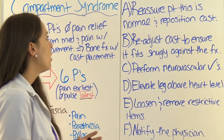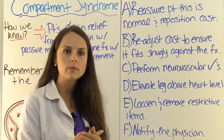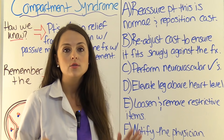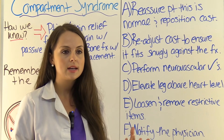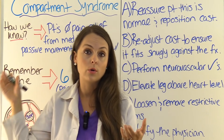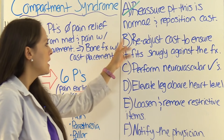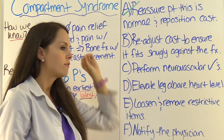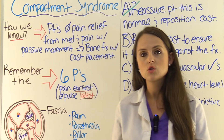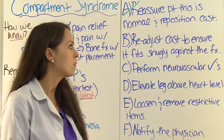Now let's look at our options. This is a select-all-that-apply, so there's more than one answer. Option A — reassure the patient that this is normal and reposition the cast? No. This is not normal. The patient should be getting some relief from the pain medication, and the fact that stretching the extremity makes it hurt worse is very alarming. There's compartment syndrome going on, so we don't tell them it's normal. Option B — readjust the cast to ensure it fits snugly? No. We have way too much compression already. There's a lot of swelling compressing the compartments and increasing pressure, so we definitely do not want anything causing more ischemia.